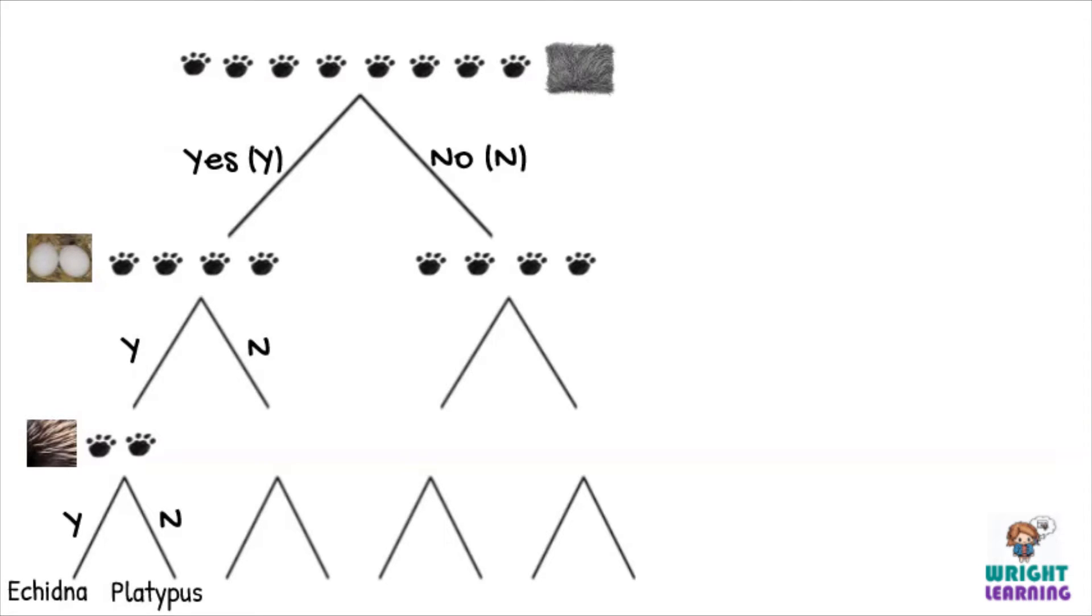And yes, echidnas and platypuses are monotremes, so they lay eggs. Then you'd just go back to the organisms that don't lay eggs, and choose another feature to separate them.